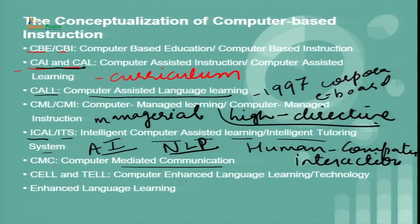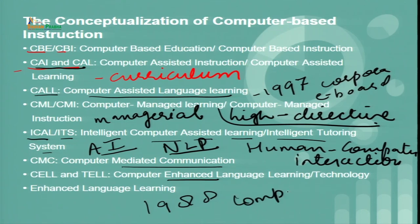CEL and TEL stand for Computer Enhanced Language Learning and Technology Enhanced Language Learning respectively. They were first coined by Professor Andrew Lian in 1988. The word 'enhanced' is used to focus a paradigm shift from computer to technology — where 'computer' refers to a particular setup required to operate, while 'technology' can be embraced at any point in time, irrespective of the availability of a computer.